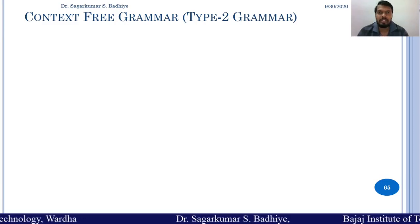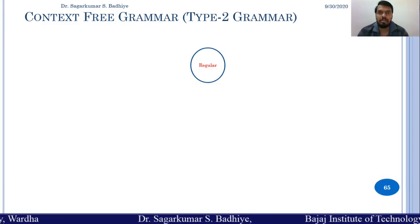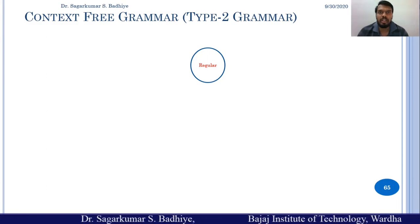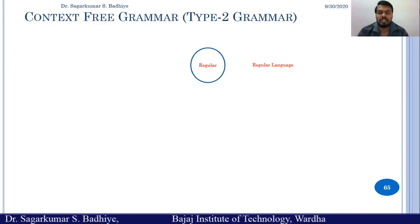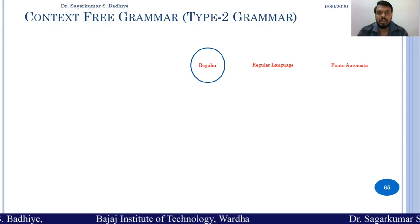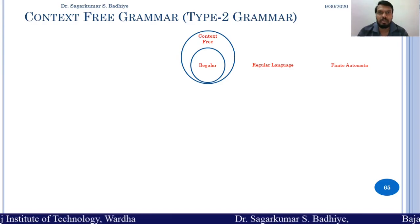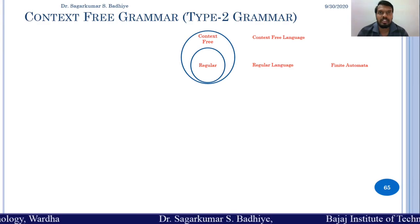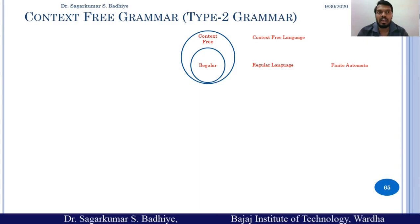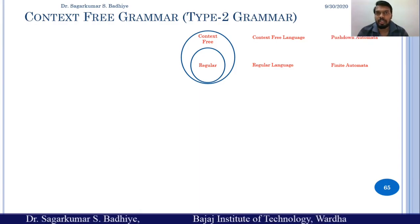Till now we have studied regular grammar, which was used to generate a language called regular language, and the machine format to represent this set of languages was the finite automata. Now we are going to deal with context free grammar, which is the superset of regular grammar. This context free grammar generates a language called context free language, and the machine format used to represent this set of languages is called pushdown automata.